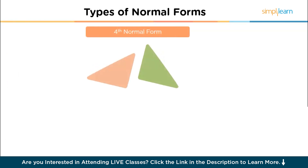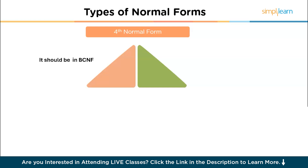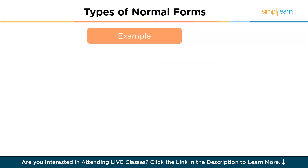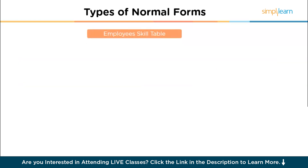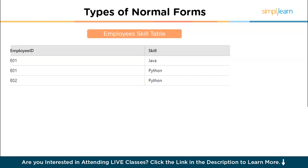Let's now talk about the fourth normal form (4NF). A table is said to be in 4NF if it is in BCNF and has no multi-value dependencies. Consider a table where an employee can have multiple skills and work on multiple projects, with columns employee ID, skill and project. The problem is multi-value dependency: an employee's skill is independent of the project but both are stored in the same table. To achieve 4NF, we separate the skills and projects into different tables — the employee-skill table and the employee-projects table — eliminating multi-value dependencies.